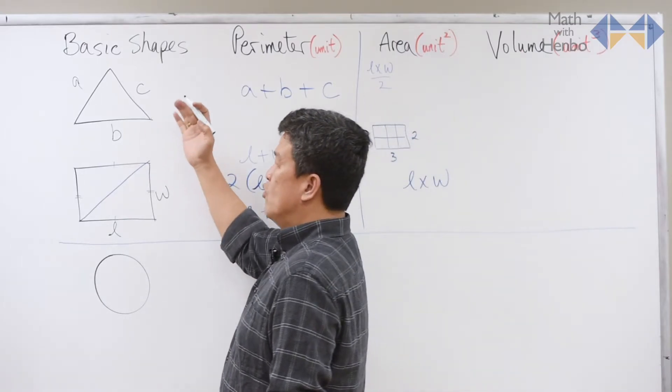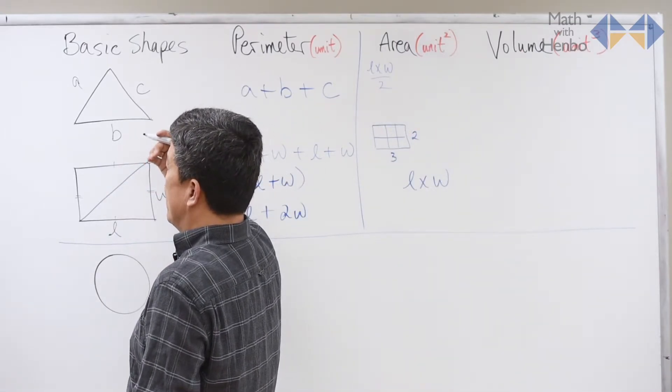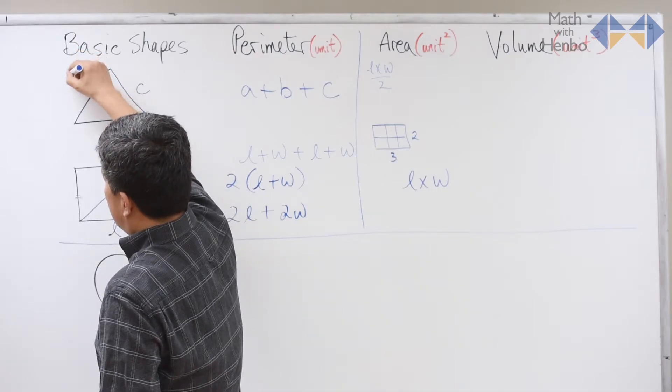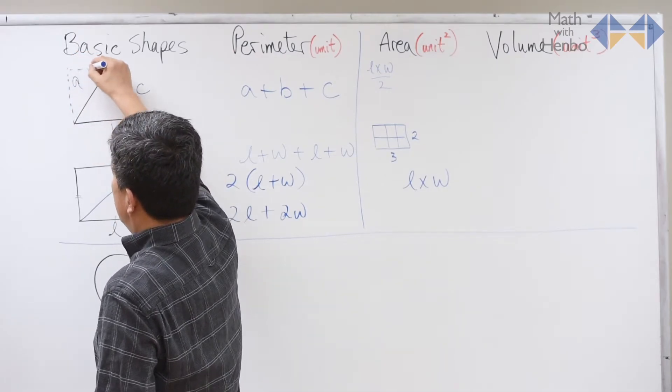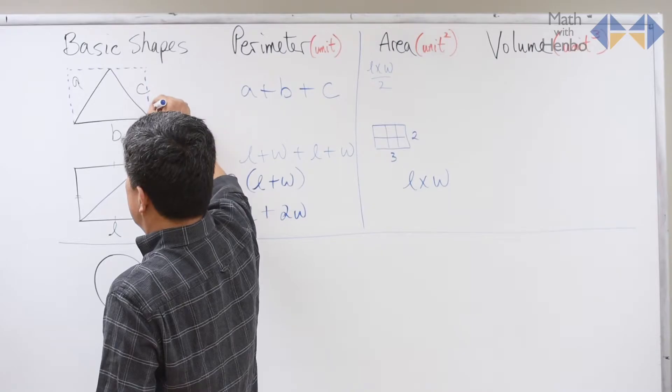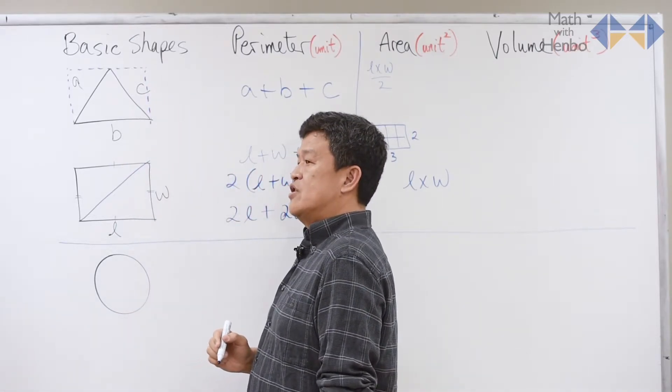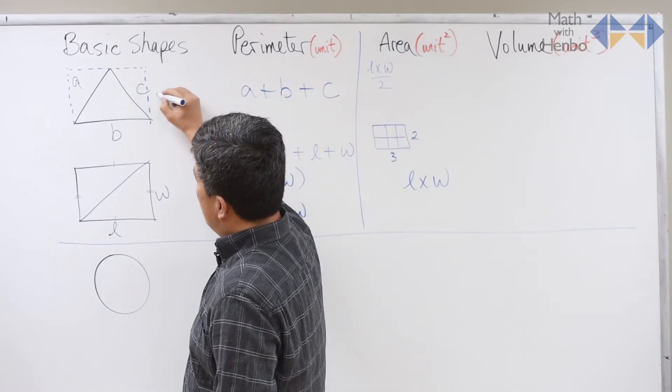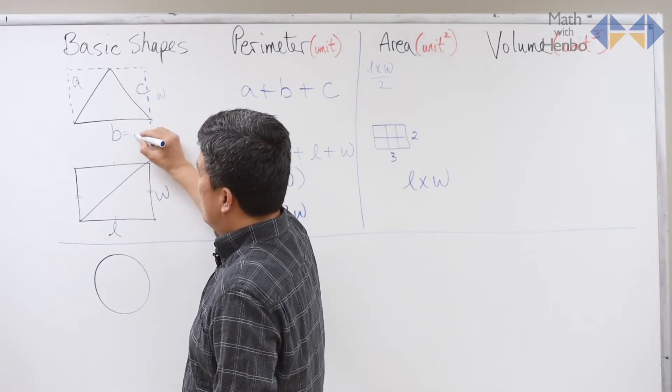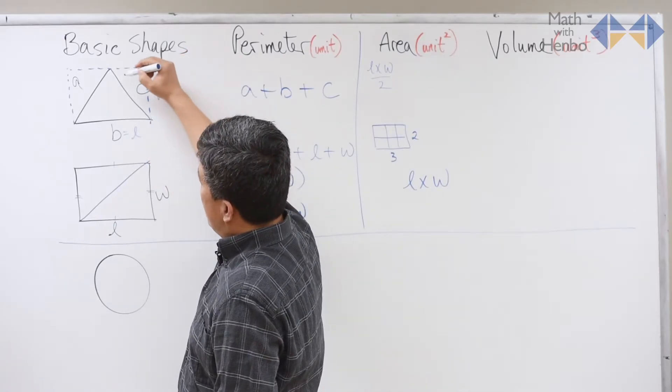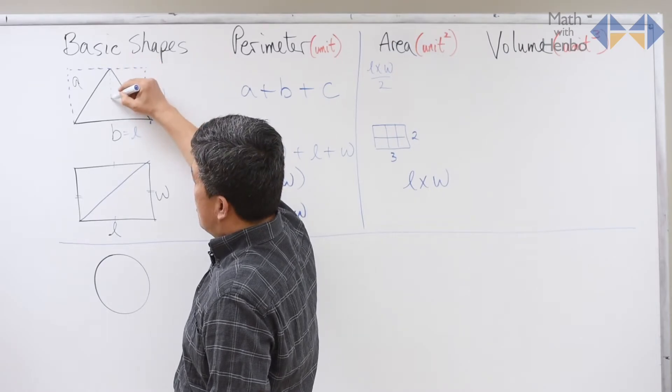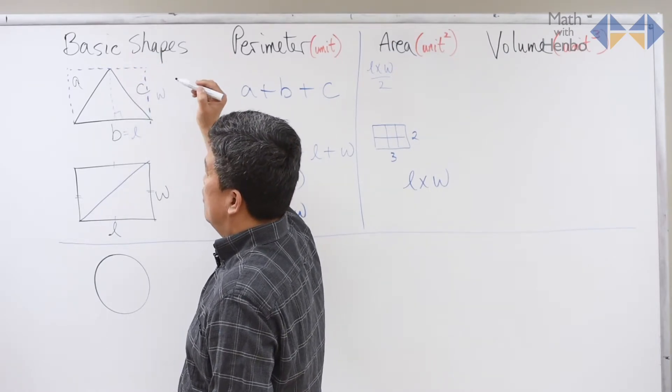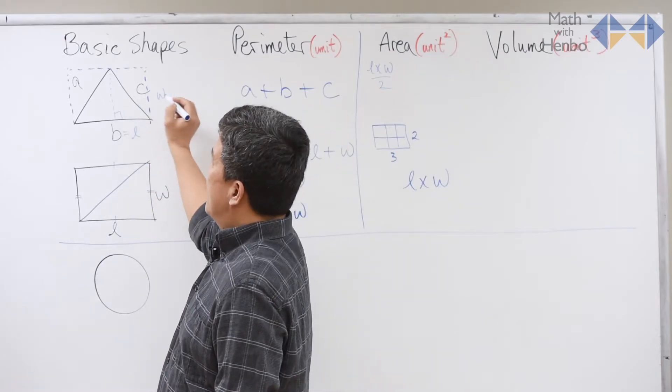But in a triangle, we don't see the length and we don't see the width. However, if we turn this triangle into an imaginary rectangle like so, you begin to see certain shapes or certain measurements appear. Here we have the width and here we have the length. For the width, no matter where we go, if we draw a perpendicular line from the top to the bottom, that is the width.